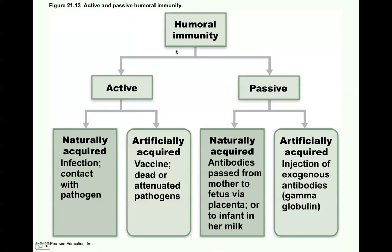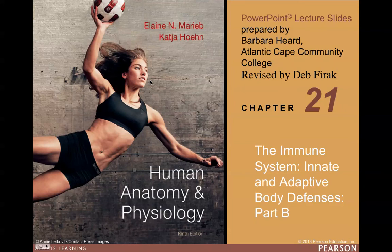So this shows humoral antibody-mediated immunity. Active naturally acquired — when you actually get the infection via contact with the pathogen. Artificially acquired — the vaccine is dead or attenuated pathogens or part of that antigen, and the body develops its own antibody. Passive naturally acquired — antibodies pass from mother to fetus via the placenta or to the infant via her milk. And artificially acquired — the injection of exogenous antibodies obtained from outside your own body, called gamma globulin. And that is the end of Part A. We will begin the next lecture, slide 59, Part B of the immune system. Have a great day.